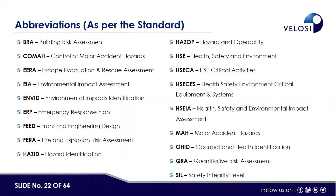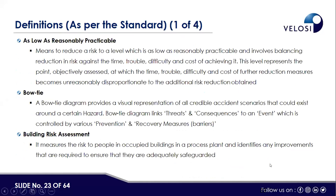Key abbreviations: BRA — Building Risk Assessment; COMAH — Control of Major Accidental Hazards; ERA — Escape, Evacuation and Rescue Assessment; EIA — Environmental Impact Assessment; ERP — Emergency Response Plan; FEED — Front End Engineering Design; FERA — Fire and Explosion Risk Assessment; HAZID — Hazard Identification; HAZOP — Hazard and Operability Analysis; HSE — Health, Safety and Environment; HSECE — Health, Safety and Environmental Critical Equipment and System; MAH — Major Accidental Hazards; QRA — Quantitative Risk Assessment; SIL — Safety Integrity Level.